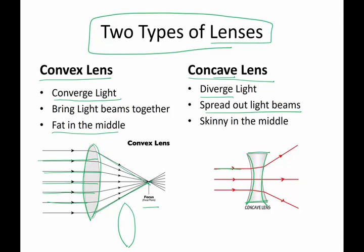A beam of light that comes in through a concave lens will actually be spread out. At this point you might be thinking, why do I want to spread light out? Well, you need to do a little of both in optics in order to get crisp, clear images. Concave lenses are skinny in the middle, and if you look at them or feel them, they have a dish or spoon-inside-a-spoon sort of shape.